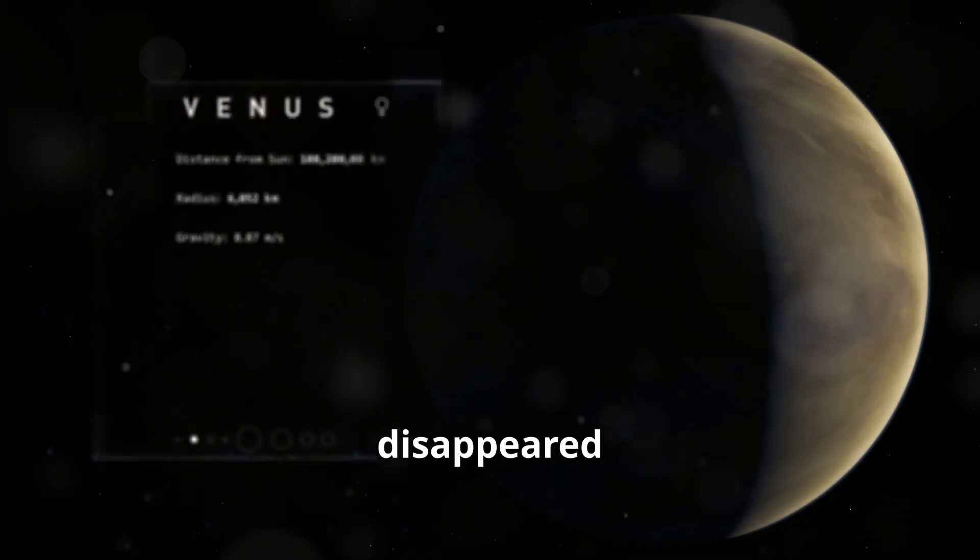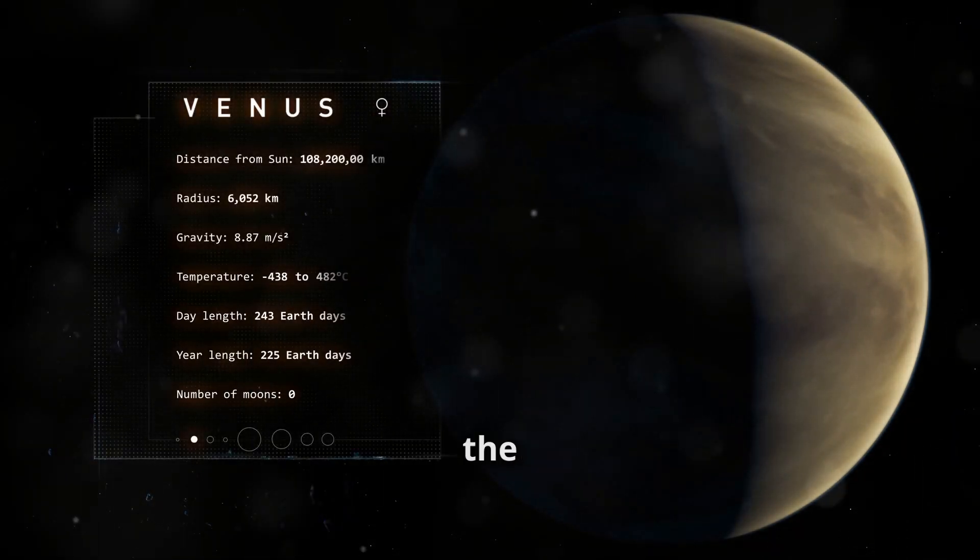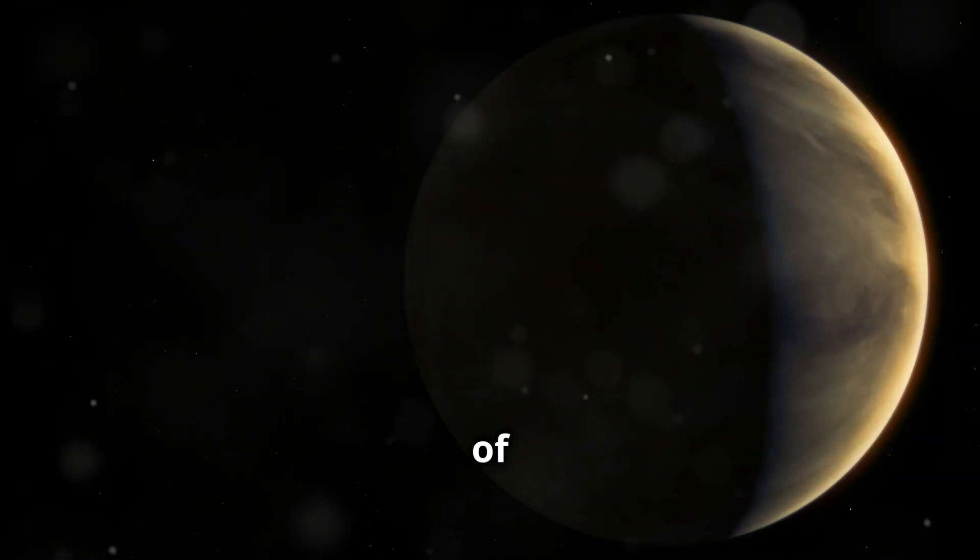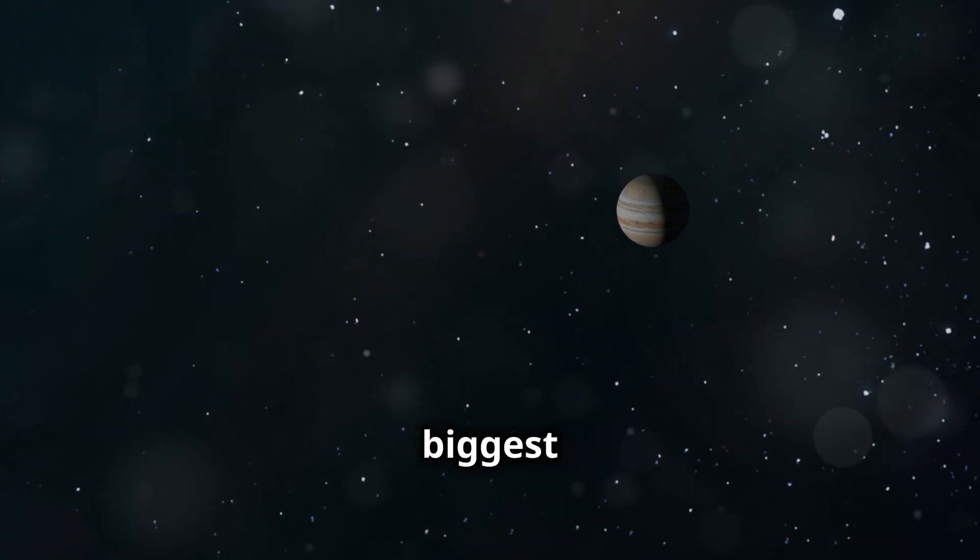And what if Venus, the planet of love, suddenly disappeared from our sky? Can you imagine the impact of that? The disappearance of Venus would be much more noticeable than the loss of Mercury. It would be the biggest confusion.